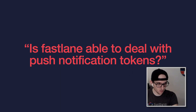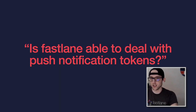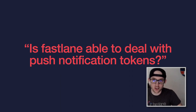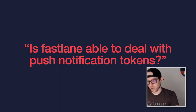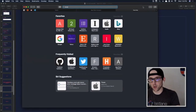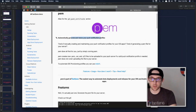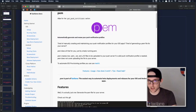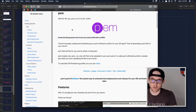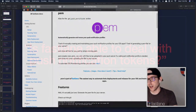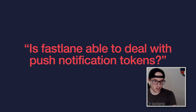Next question: is Fastlane able to deal with push notification tokens? Fastlane can create certs for push notifications. The tool is called PEM — it automatically generates and renews your push notification profiles. It's not necessarily tokens — tokens are what apps use when you register for notifications. But Fastlane does have PEM, also called `get_push_certificate`, for dealing with push notifications.